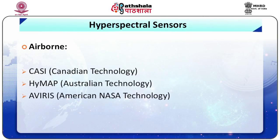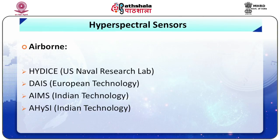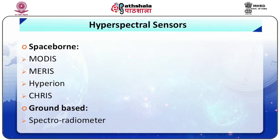We will now discuss the various types of hyperspectral sensors. Airborne examples include CASI, technology HyMap, Everest HyRIS, DAIS, and AIMS, which is the Indian technology. Spaceborne hyperspectral sensors include MODIS, MERIS, Hyperion, and CHRIS, whereas ground-based instruments include the spectroradiometer.